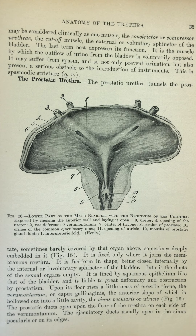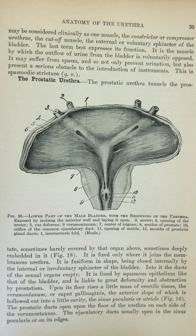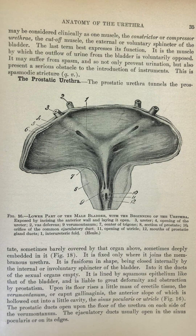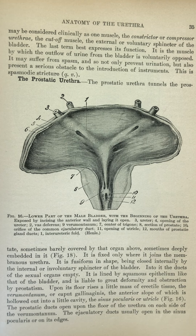Figure 16: Lower part of the male bladder with the beginning of the urethra, exposed by incising the anterior wall and laying it open. Key structures labeled include: ureter (3), opening of the ureter (4), vas deferens (2), verumontanum (9), center of trigone (7), section of prostate (8), orifice of the common ejaculatory duct (10), opening of utricle (11), mouths of prostate gland ducts (12), and interureteric fold (1).